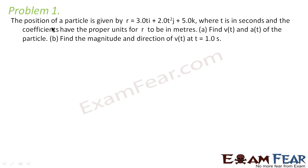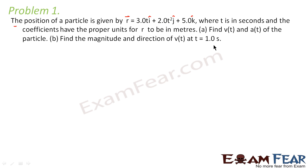Let us look at problem 1. It says the position of a particle is given by r = 3t i-cap + 2t² j-cap + 5k-cap, where t is in seconds and the coefficients have the proper units for r to be in meters. We have to find v(t), the velocity at time t, and acceleration at time t. The second part asks to find the magnitude and direction of velocity at t = 1 second.